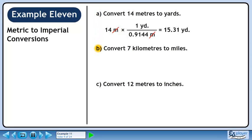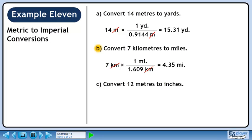In part B, we'll convert 7 kilometers to miles. We know that one mile is 1.609 kilometers. We want kilometers to cancel out, so put 1.609 kilometers in the denominator. We want to keep miles, so put 1 mile in the numerator. 7 divided by 1.609 is 4.35. Kilometers cancel out, leaving miles.